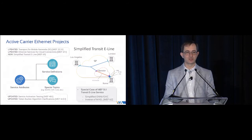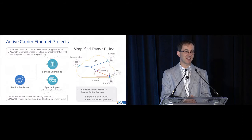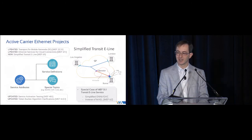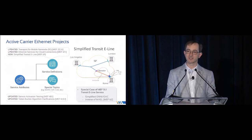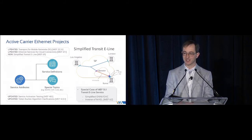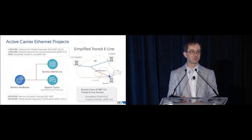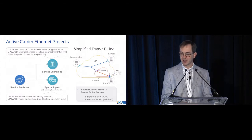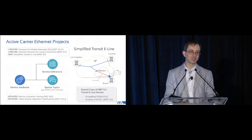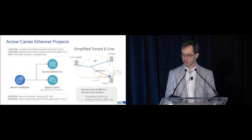Simplified transit e-line is the reverse case of managed access e-line. It says: if I'm going to put my own device at the subscriber's location, then the access service I need to buy is much simpler. The word 'transit' appears because technically the service provider's device creates a small operator network and the interface to the access provider is an ENI, making it technically a transit service. The idea is again to save cost — if the access service can be simpler because I have my own device there, it should also be cheaper. It's a simplified, single class of service, transparent service with basically no OAM capability.